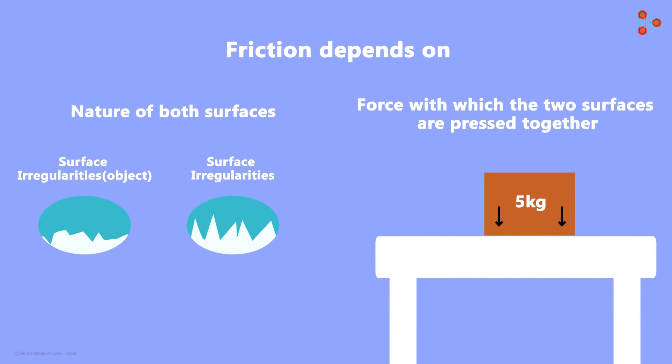So mainly there are two things on which the force of friction depends: the nature of both surfaces and the force with which the two surfaces are pressed together.